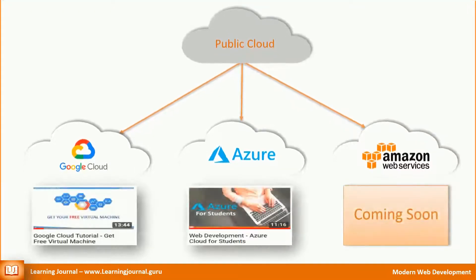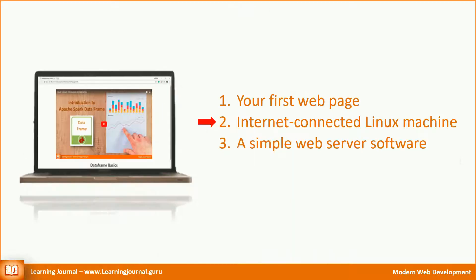I have separate videos to explain the step by step process for registration and some basics of creating a Linux machine and using them — a free virtual machine in Google Cloud, and a free student account for Microsoft Azure. I recommend you to watch those videos and create an account in one of these cloud platforms. The rest of the video assumes that you already have an account and have created a Linux virtual machine. If you have assigned it a static IP address, you have successfully fulfilled your second requirement. The next requirement is to install and configure a web server.